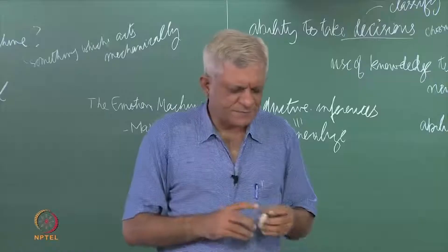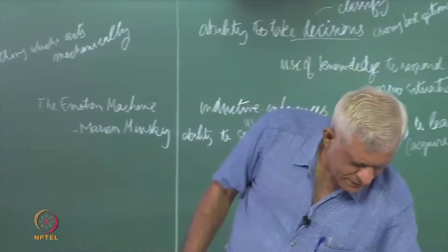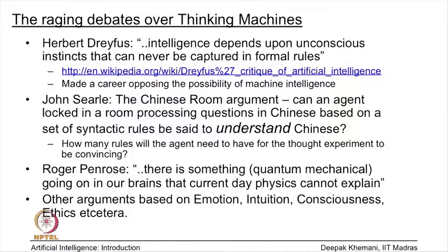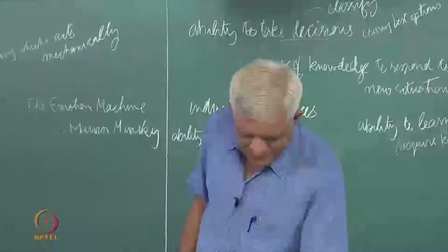But of course there is a little bit of an operational trap there. How many rules will an agent need to have for the thought experiment to be convincing? And we will see this idea again in a different form as we go along.